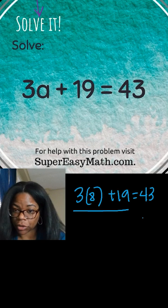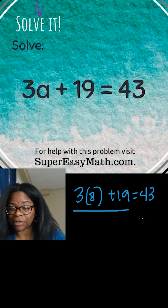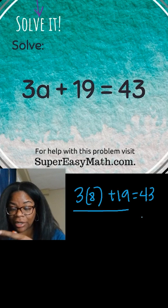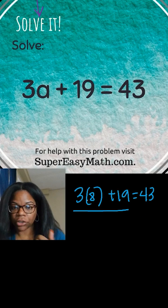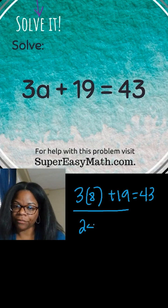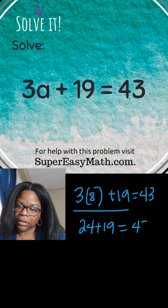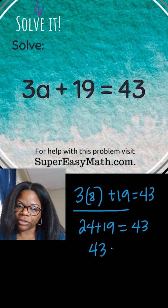If it's not, then something's wrong — either you messed up when you were originally solving, or you're messing up while checking your answer. So 3 times 8 is 24, and 24 plus 19 does equal 43. So we did it correctly.